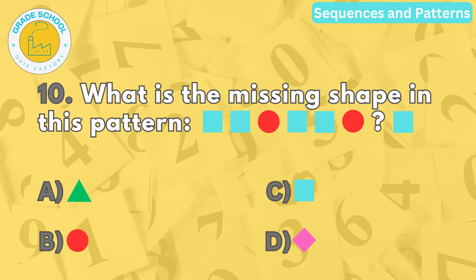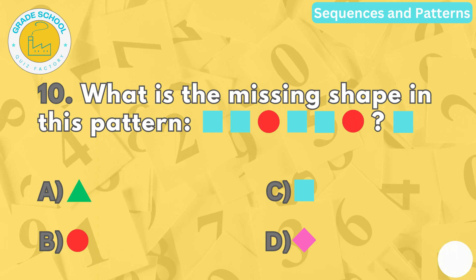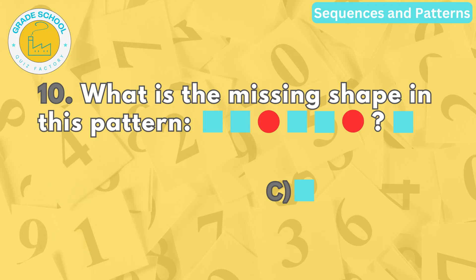Lastly, what is the missing shape in this pattern? The correct answer is letter C. Square. The pattern alternates between two shapes: square, square, square, circle, square, square, square, and so on. So the missing shape after circle is square.